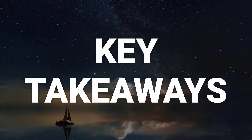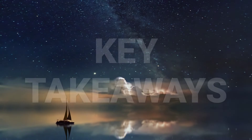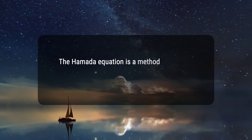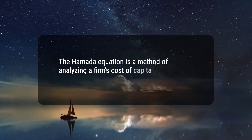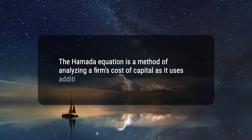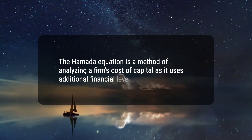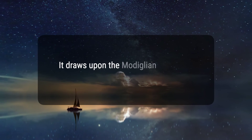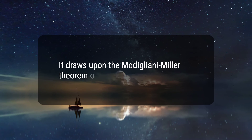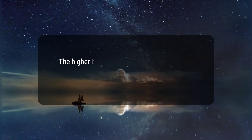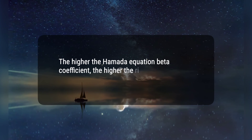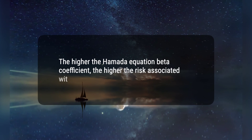Here are three key takeaways. One, the Hamada equation is a method of analyzing a firm's cost of capital as it uses additional financial leverage. Two, it draws upon the Modigliani-Miller theorem on capital structure. Three, the higher the Hamada equation beta coefficient, the higher the risk associated with the firm.